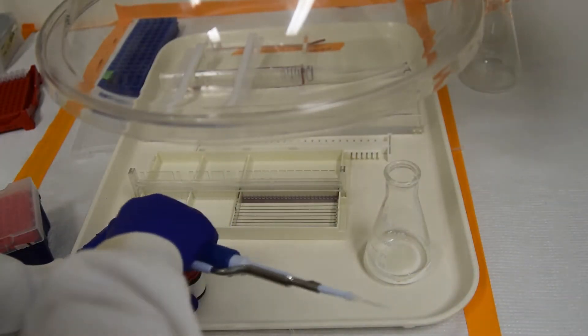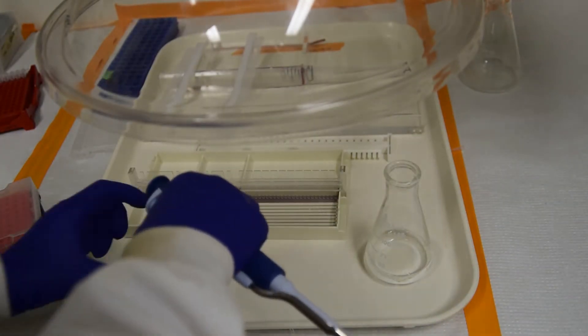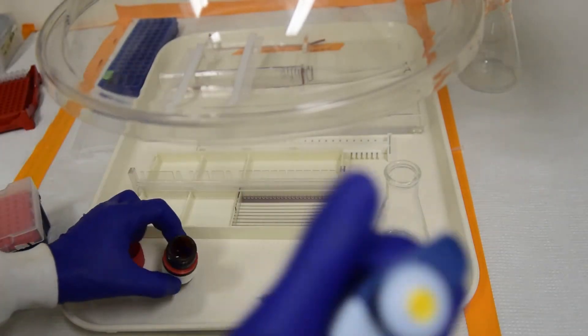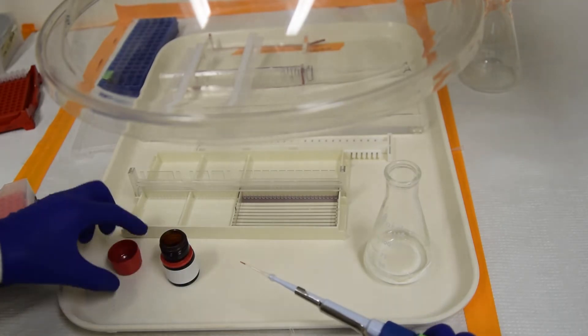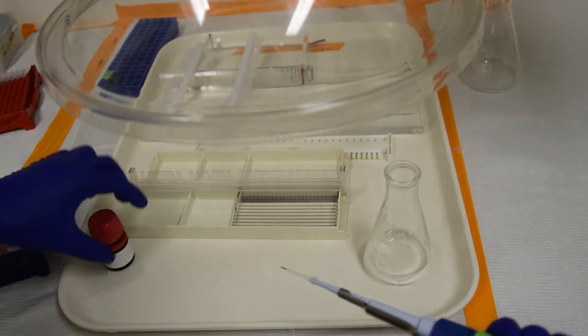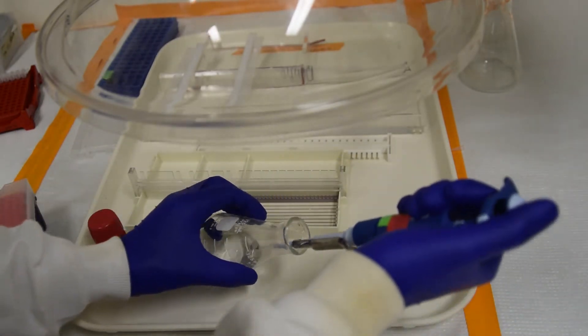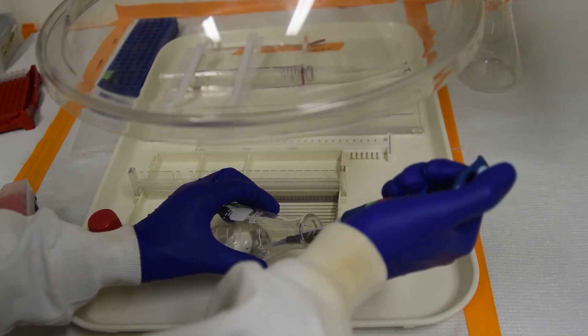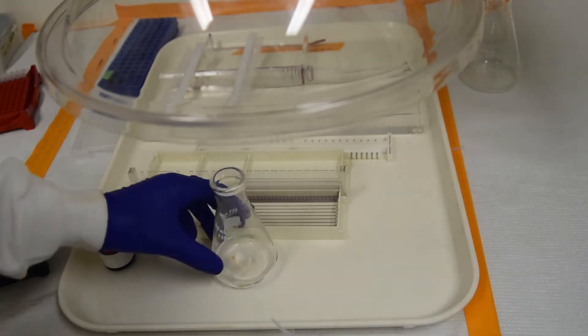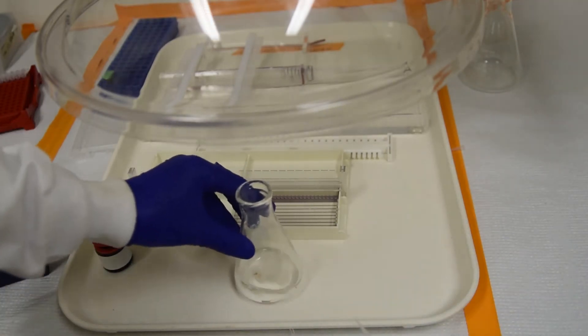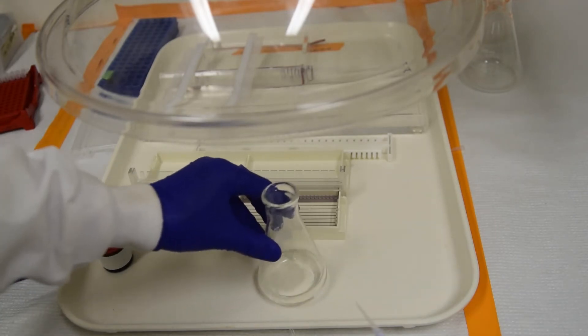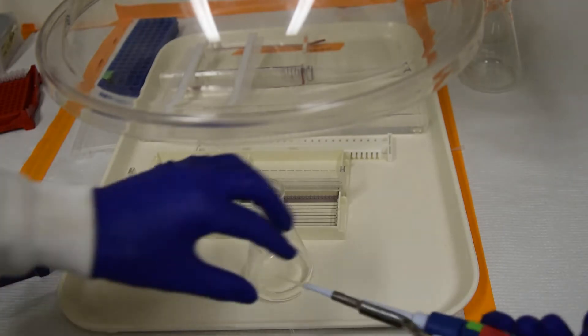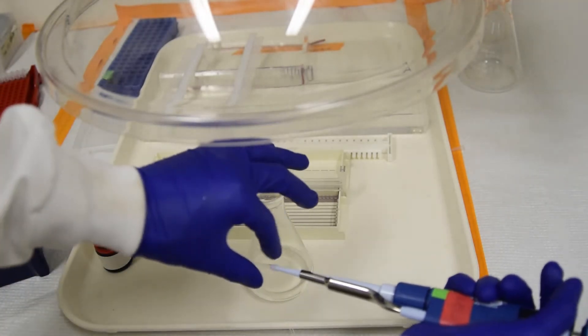Carefully unscrew it. Add the ethidium bromide and swirl to incorporate. Place your tip in the waste container.